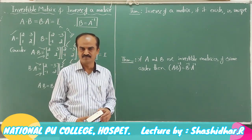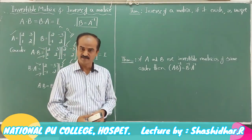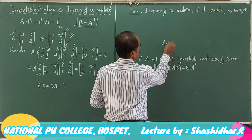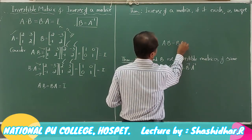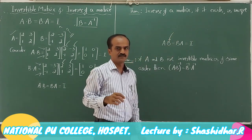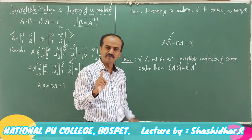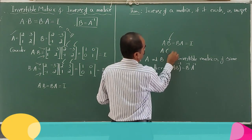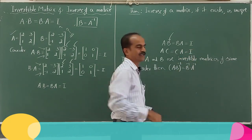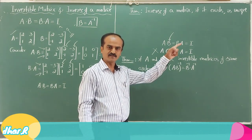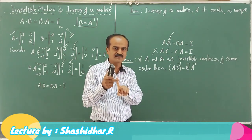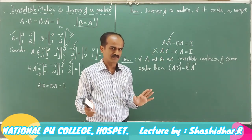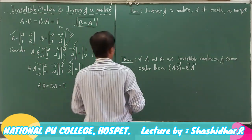First theorem: the inverse of a matrix, if it exists, is unique. This means if matrix A is invertible and there exists matrix B satisfying AB = BA = I, there will not be more than one matrix satisfying this condition. Suppose we assume C is also a matrix such that AC = CA = I — this is not possible because the inverse, if it exists, is only one.